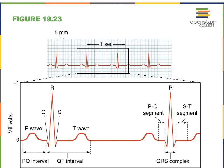Here we see an EKG of a healthy individual with the deflection waves, and notice that they keep repeating over and over again, just like our heartbeat keeps occurring and reoccurring. An EKG is not showing your heartbeat — it's showing the electrical activities, which then lead to heartbeats.